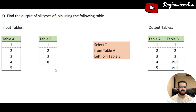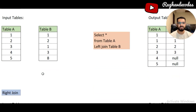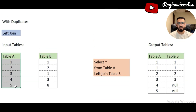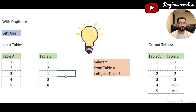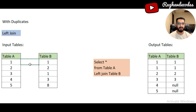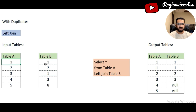Now it's time to introduce the challenge. What if we have duplications? Here you can see Table A and Table B, but now Table B has duplicate values. What is going to be the change in the output? In this case, our left table is going to explode. Explosion usually happens in a scenario where we have duplications in the joined table. This 1 from Table A will get joined with one instance of 1 from Table B, and also with the other instance of 1 from Table B.